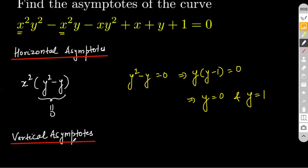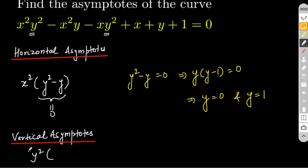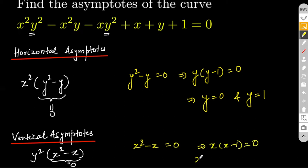Now talking about vertical asymptotes. For the vertical asymptotes, the process is more or less the same. Now we identify what is the highest power of y occurring in this expression, which is clearly y squared, present at two positions. We collect all these y squared terms together and figure out that x² − x happens to be the coefficient of y squared. Equate this to 0, and that is all you need to do to get your vertical asymptotes. This implies x = 0 and x = 1, so these two are your vertical asymptotes. This is how we find our horizontal and vertical asymptotes for a given equation.